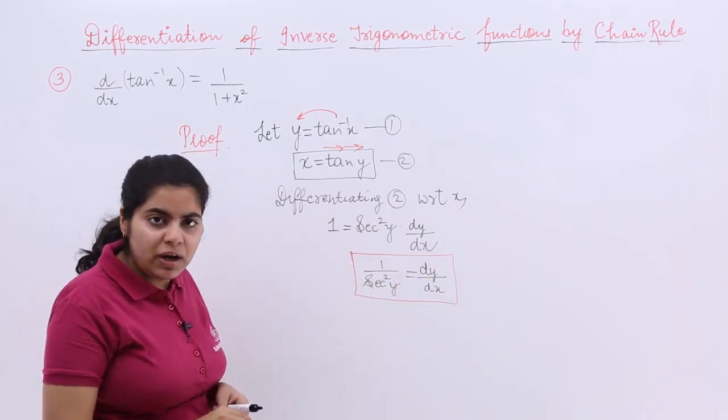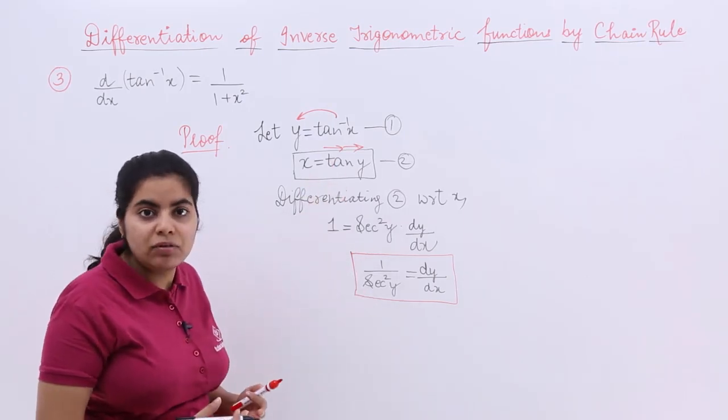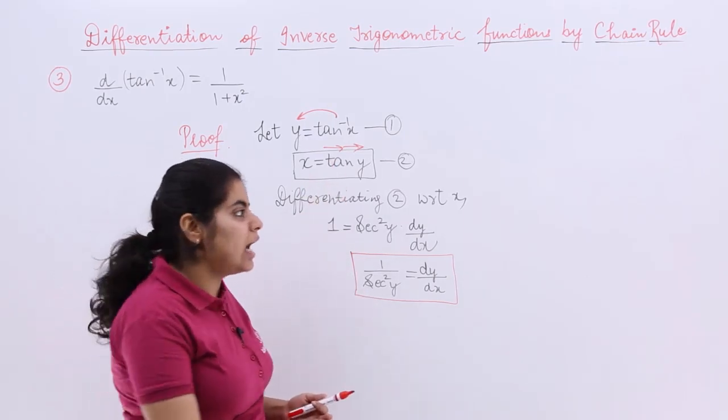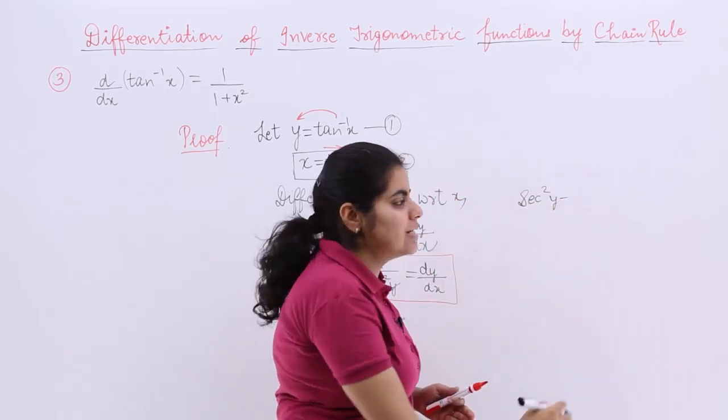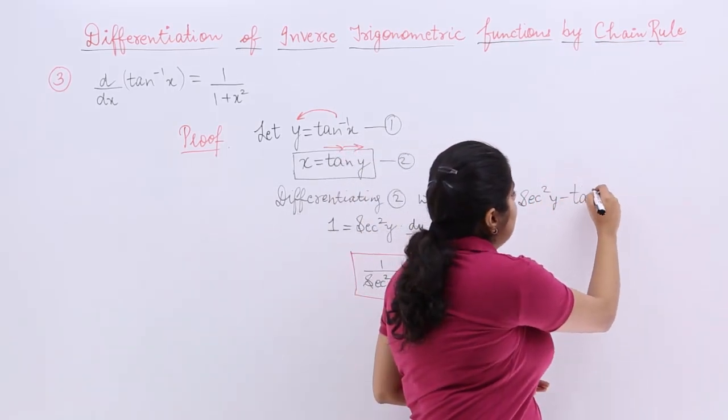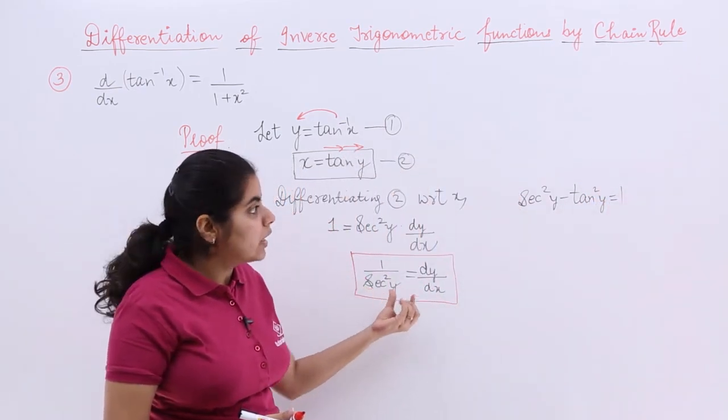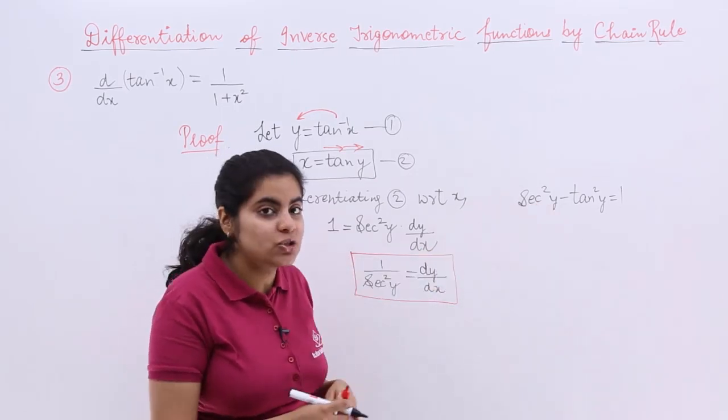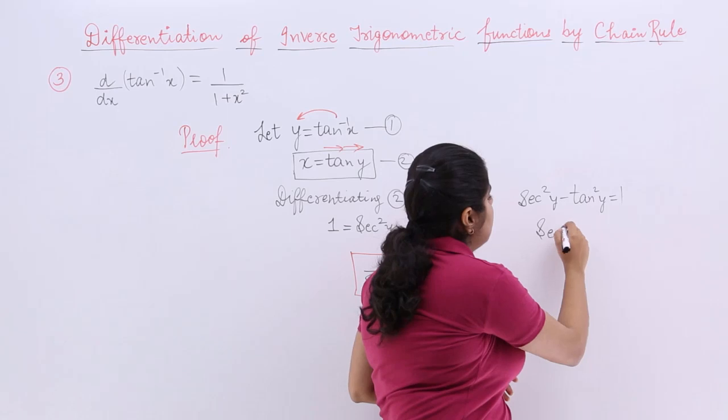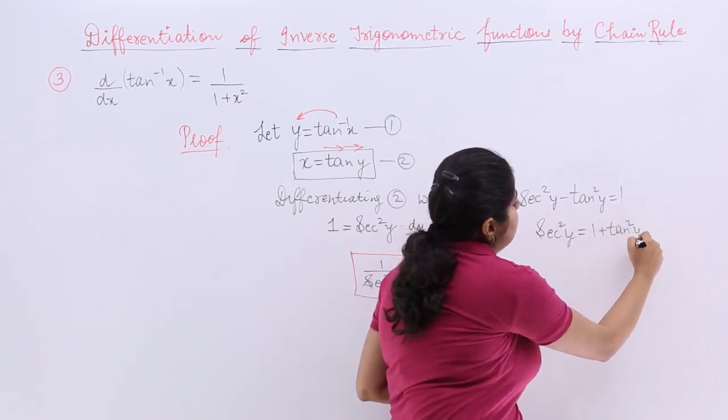Now secant square y, is there any relation of secant square with tan square? Do we have a formula? Yes we have. The formula is secant square y minus tan square y equals 1. So secant square y can be substituted as 1 plus tan square y.